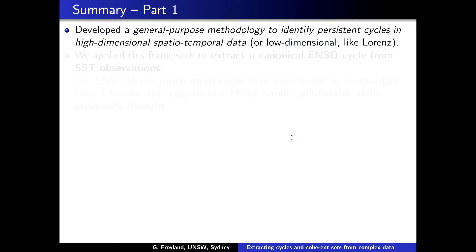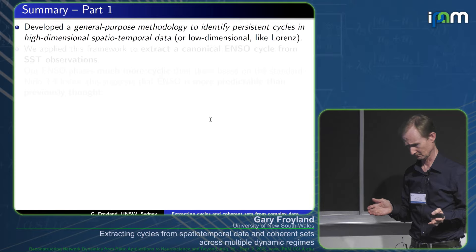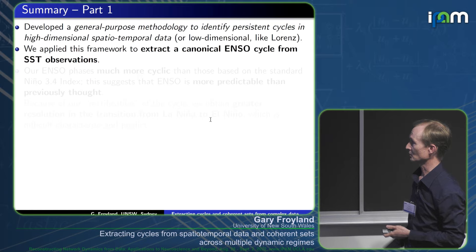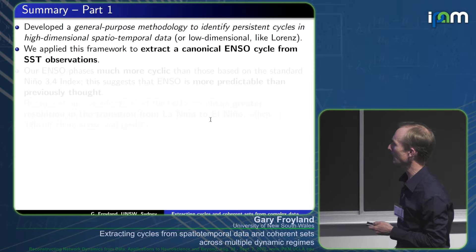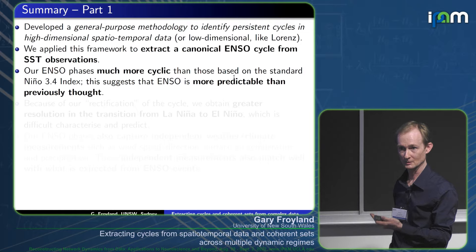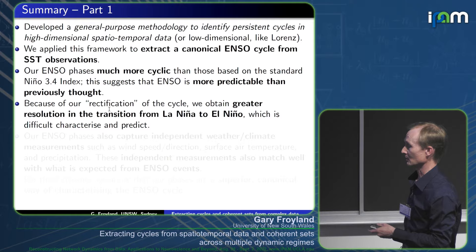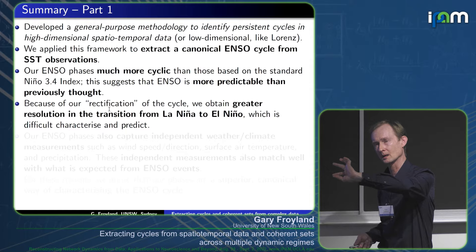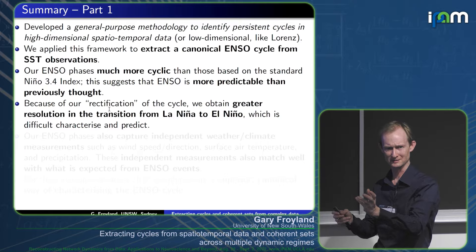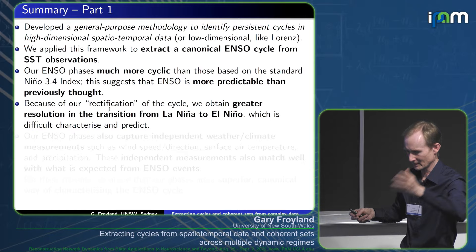This is my last slide for Part 1. Constructing a transfer operator from data using kernel ideas — even in high dimensions — is a nice way to extract persistent cycles. Our phases are much more cyclic than those based on the Niño 3-4 index, which can lead to greater predictability when phases are correctly assigned. The rectification distorts real time to give a constant flow rate around the cycle, expanding the La Niña to El Niño buildup from four phases to five. All phases were built on sea surface temperature, but composite images from precipitation, wind, and air pressure also check out as expected for an ENSO cycle.